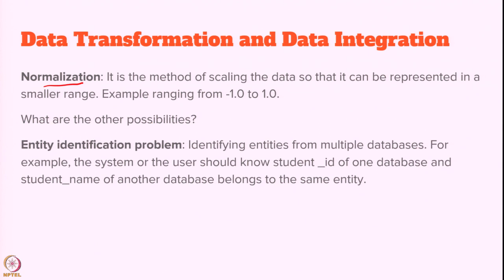Data integration involves having data from different datasets or databases and integrating them so that the same information is conveyed in the collective dataset. For example, you want student ID from one database and student name from another dataset — the same student's name should match the student ID. How can we combine them consistently? This problem is called the entity identification problem, which comes under data integration. This is a dominant problem we solve in data integration.